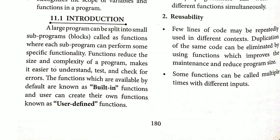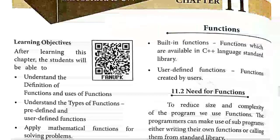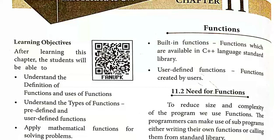There are two types of functions. The functions available by default are known as built-in functions — also called predefined or library functions. The programmers who created C++ have already created some predefined functions that are installed on your computer, so you don't need to code them — you can just use them by name. User-defined functions are the functions created by the user.